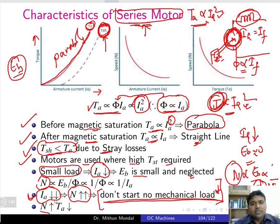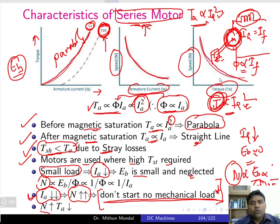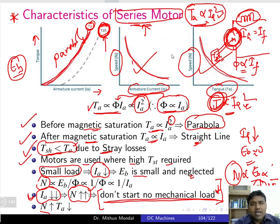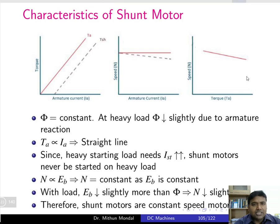When speed increases, torque decreases. The speed versus armature current curve and the speed versus torque curve are both falling or decaying in nature for a series motor. In summary: the torque-armature current curve is parabolic before saturation, the motor is used for high starting torque applications, it must not be started at no-load, and both speed-current and speed-torque graphs are decreasing.